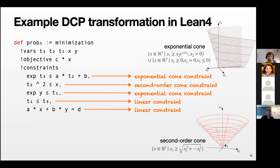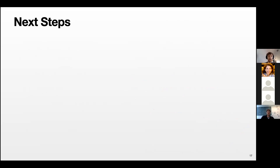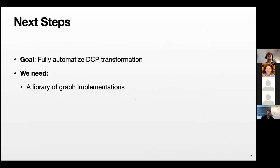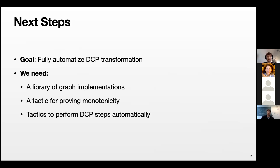The next steps are to fully automate the DCP transformation. This requires: a library of graph implementations (currently only sqrt and log are added), a tactic for proving monotonicity (a condition of all these transformations), tactics to perform each DCP step automatically, and an overarching tactic to guide the whole transformation.